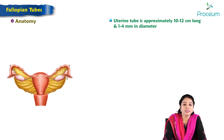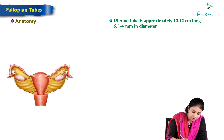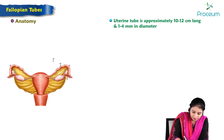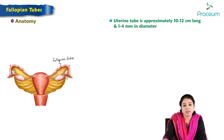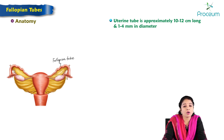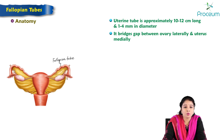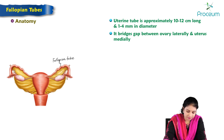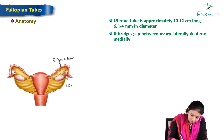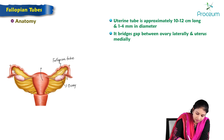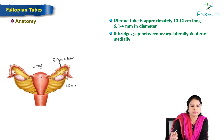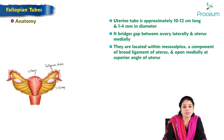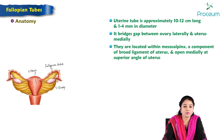The uterine tube is approximately 10–12 cm long and 1–4 mm in diameter. It bridges the gap between the ovary laterally and the uterus medially. The fallopian tubes are located within the mesosalpinx, which is a fold of peritoneum and a component of the broad ligament of the uterus, and opens medially at the superior angle of the uterus.